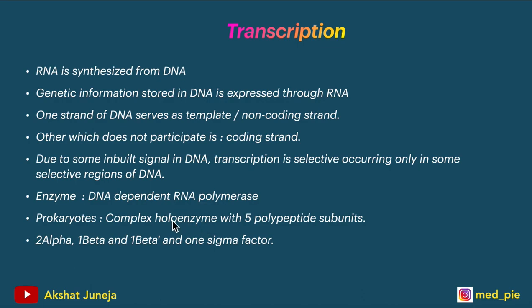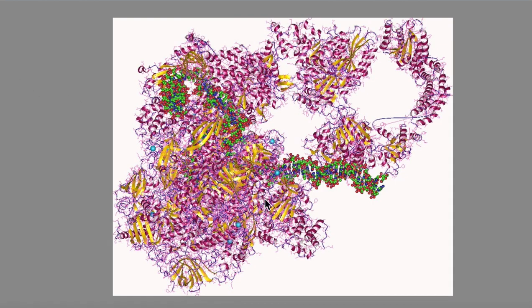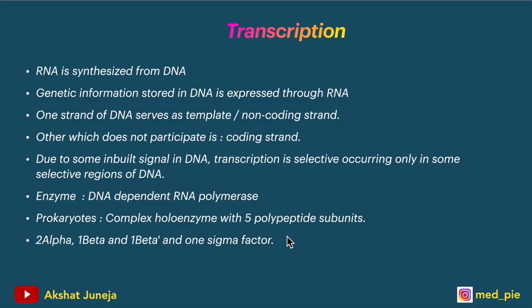In prokaryotes, RNA polymerase is a complex holoenzyme with 5 polypeptide subunits: 2 alpha, 1 beta, 1 beta-dash, and 1 sigma factor. The sigma factor is the most important subunit — we will see why as we go through the transcription steps.